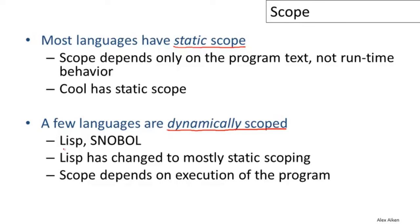Historically, Lisp was an example of a dynamically scoped language, though it has since switched to static scoping. Another language of mostly historical interest, called Snobol, also had dynamic scoping. The characteristic of dynamic scoping is that the scope of a variable depends on the execution behavior of the program.